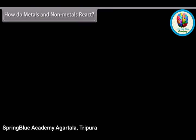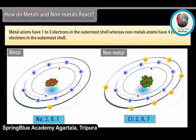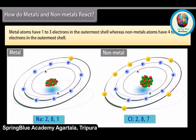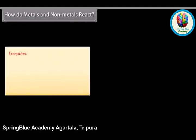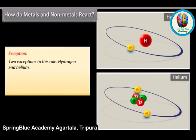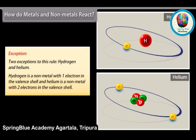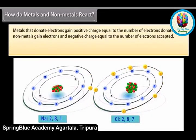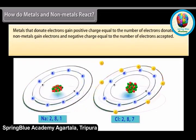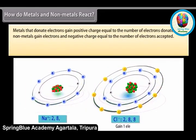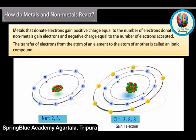How do metals and non-metals react? Metal atoms have 1 to 3 electrons in the outermost shell, whereas non-metal atoms have 4 to 8 electrons in the outermost shell. Two exceptions to this rule are hydrogen and helium. Metals that donate electrons gain a positive charge equal to the number of electrons donated, and non-metals gain electrons and a negative charge equal to the number of electrons accepted. When a metal atom donates 1, 2, or 3 electrons from its valence shell to a non-metal atom that has the ability to accept these electrons, it is known as electrovalency. As a result, both atoms form the structure of an inert gas. The transfer of electrons from the atom of one element to the atom of another forms an ionic compound.